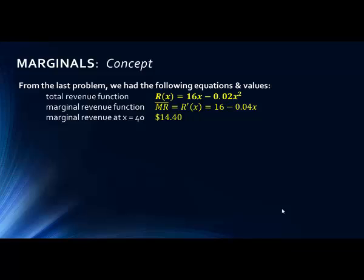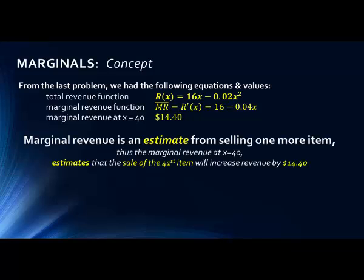Let's revisit the marginal concept. The total revenue function is R(X) = 16X − 0.02X². The marginal revenue function is R′(X) = 16 − 0.04X, which can be evaluated at any value of X. The marginal revenue at X = 40 equals $14.40. This is an estimate: it tells us that selling the 41st item will increase revenue by approximately $14.40.